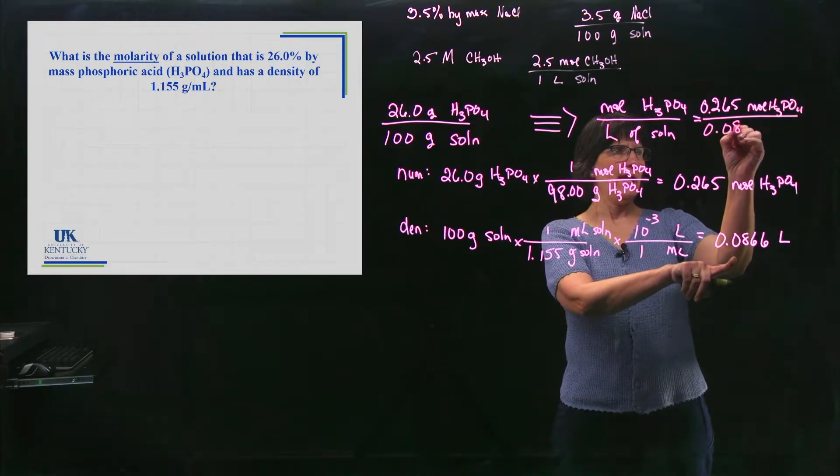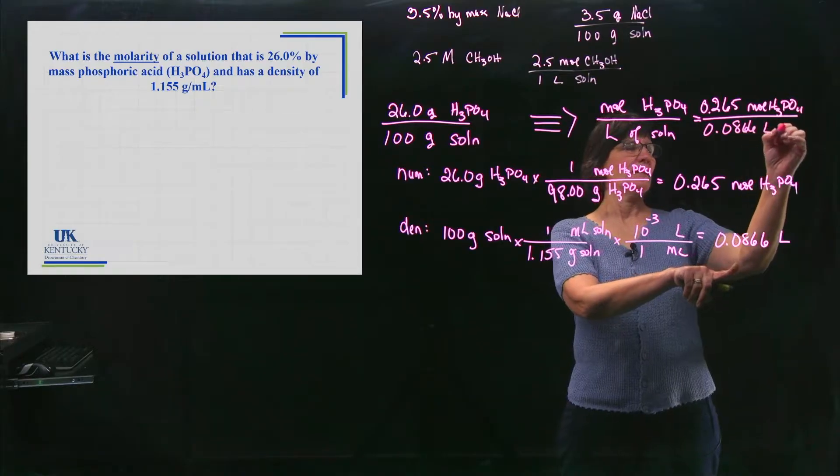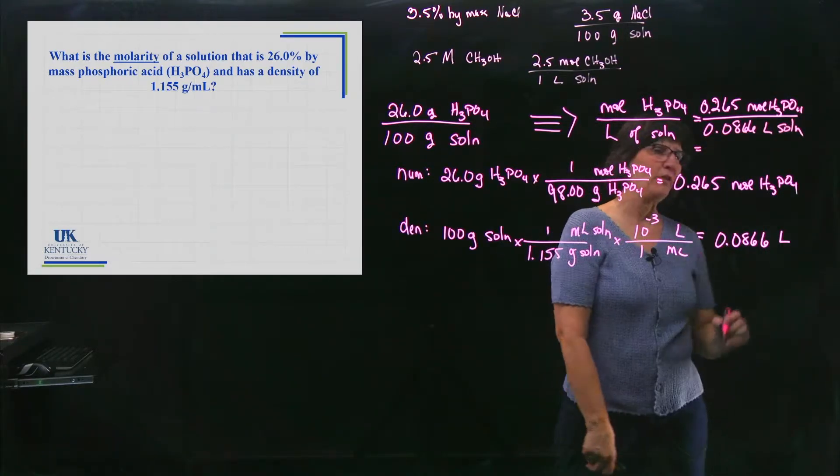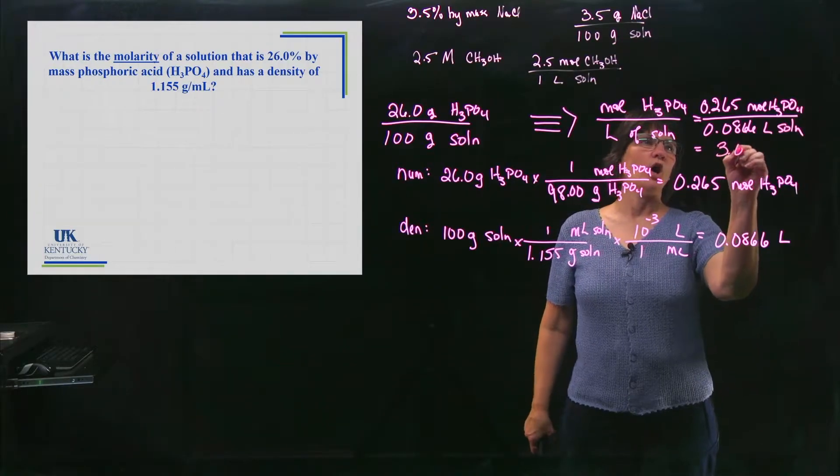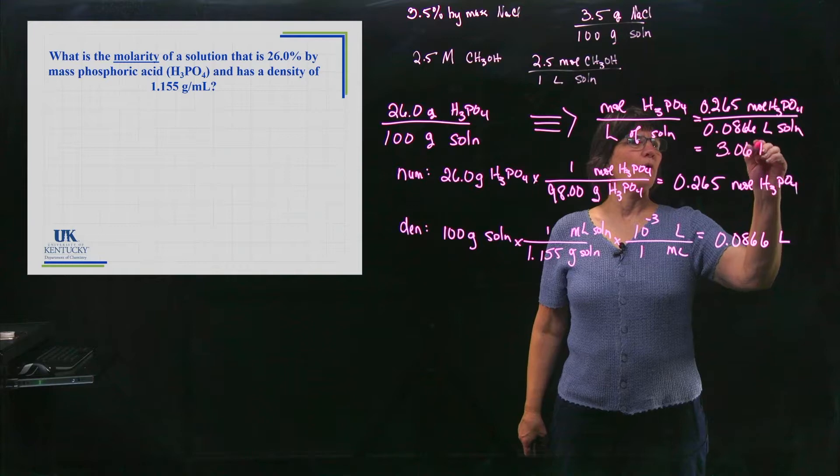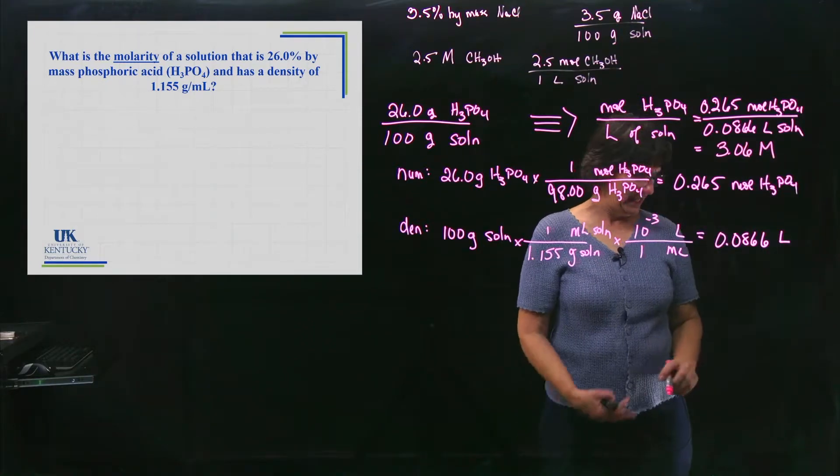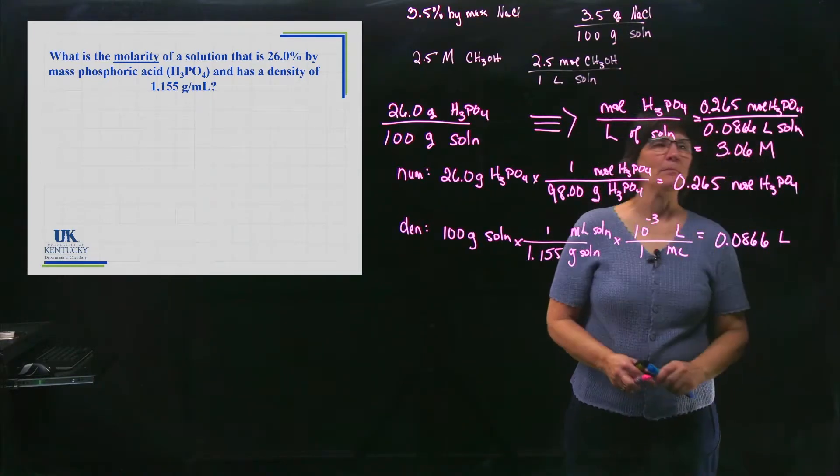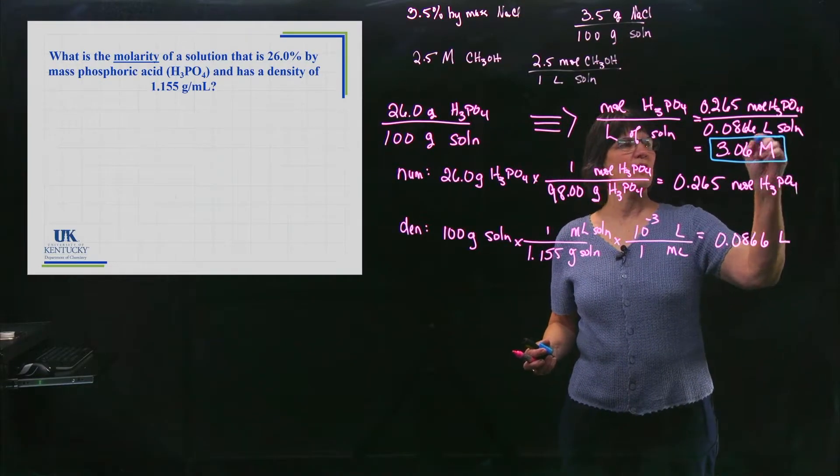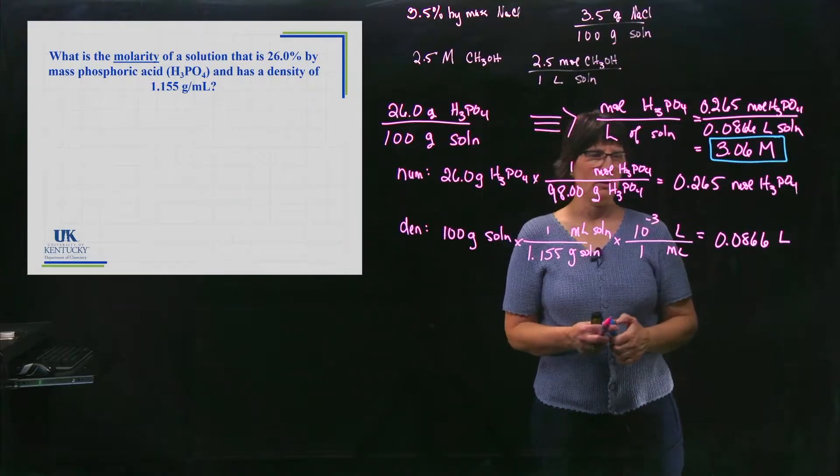And the value for that will be 3.06. And we could write it as moles per liter, or put a big M there, and that is molarity, molar. The molarity is 3.06 moles per liter.